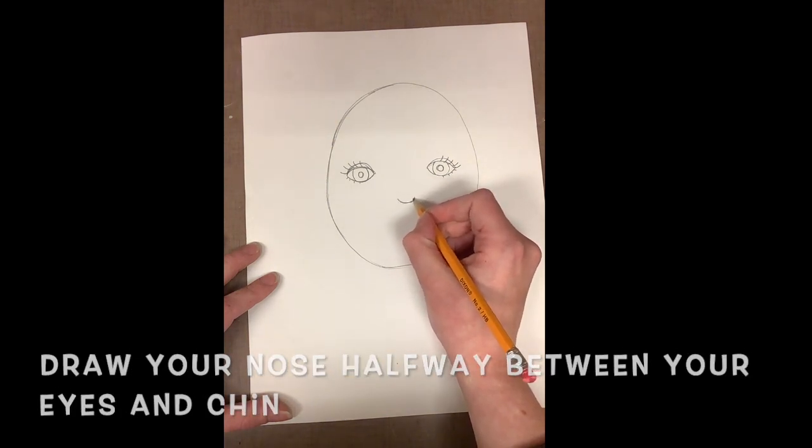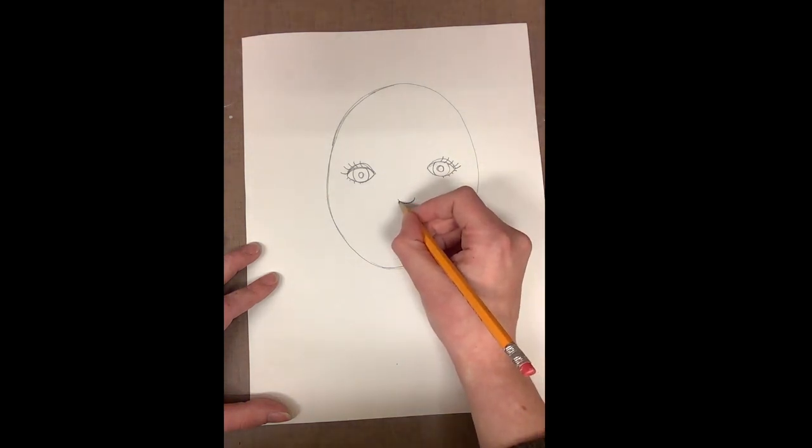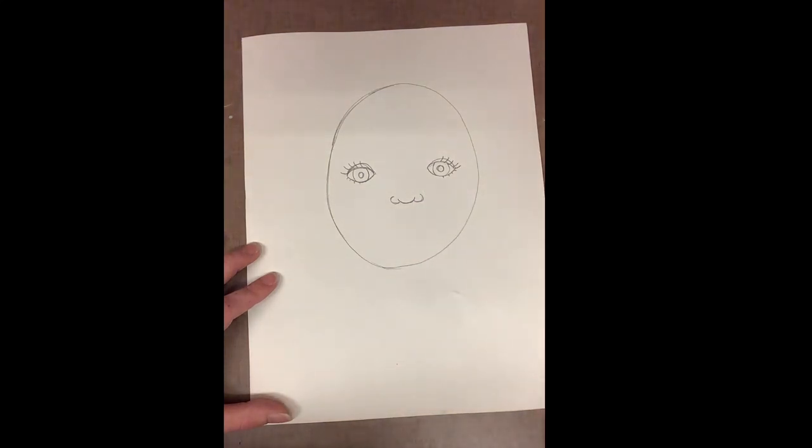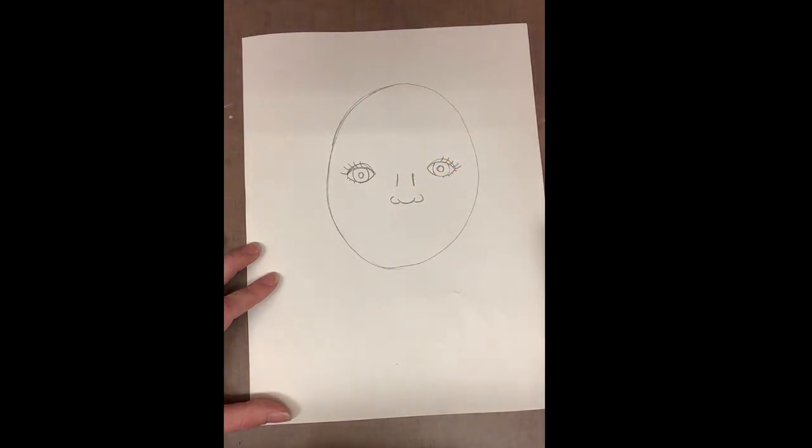Next I'll draw my nose. The nose is halfway between where your eyes are and where the bottom of your head or your chin is. To draw my nose, I draw a curving shape and then two other curving shapes right next to it and two lines leading up towards the eyes.